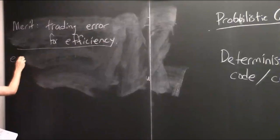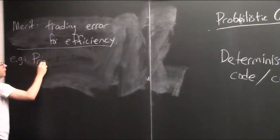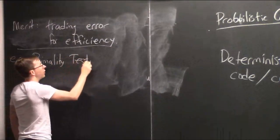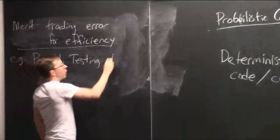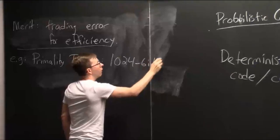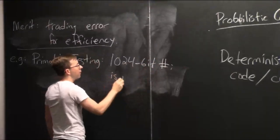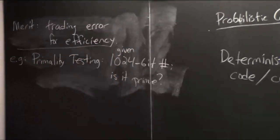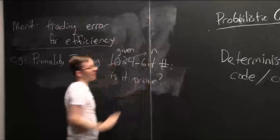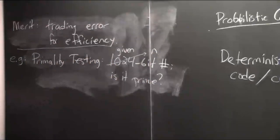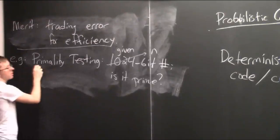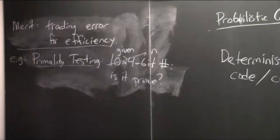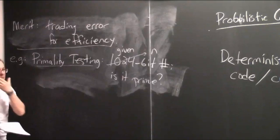A good example is the topic of primality testing. This is the task where you're given a super long number — think of it as a 1,024-bit number. This is a task you often need in cryptographic schemes based on number-theoretic things. Let me be a little more general and call this an n-bit number, but n equals 1,000 is a plausible value.